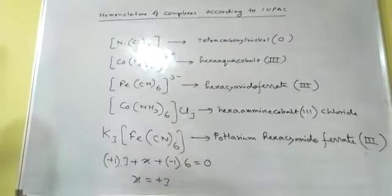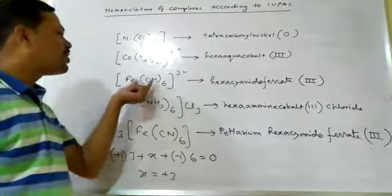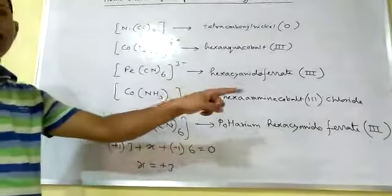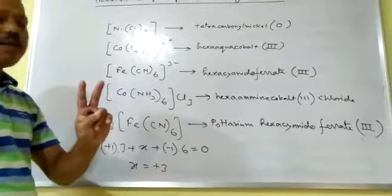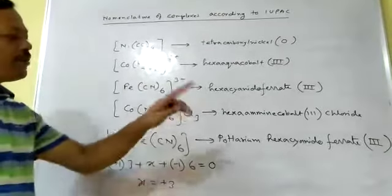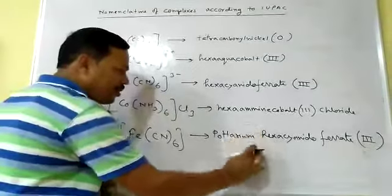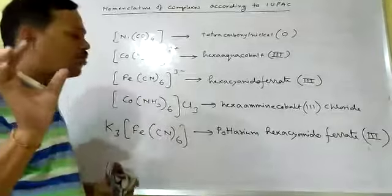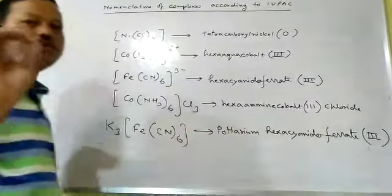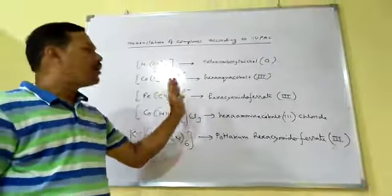Like this, you can write the name of a complex. Always remember: you apply the suffix '-ate' with the name of the metal when the complex contains negative charge outside the square bracket, or when the complex contains a cation as counter ion. There are two conditions for writing '-ate' with the metal name. Also, potassium is not part of the complex itself, so in the complex portion there should be no gap and no capital letters. This is the process of naming coordination compounds according to the IUPAC system.